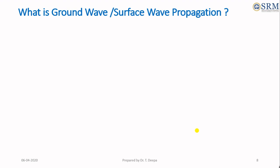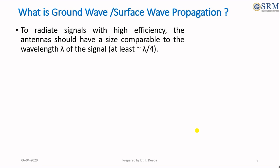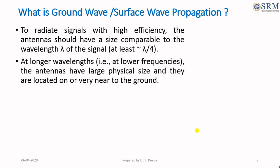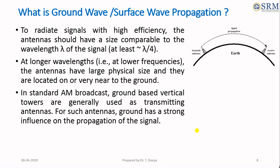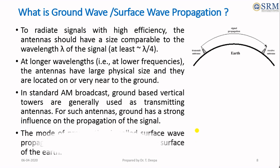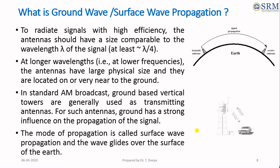What is ground wave propagation? To radiate signals with high efficiency and without loss of energy, the antennas should have a size comparable to the wavelength of the signal — at least approximately λ/4, where λ = c/f. At longer wavelengths, that is at lower frequencies, the antennas have large physical size and are located very near to the ground. For example, in AM broadcast systems, ground-based vertical towers are generally used as transmitting antennas, and the ground has a strong influence on the propagation of the signal. This mode is called surface wave propagation, and the wave glides over the surface of the earth.